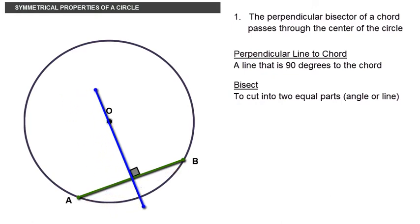And this property states that that line, the perpendicular bisector, will pass through the center of the circle. The point C is where the perpendicular bisector cuts the chord.